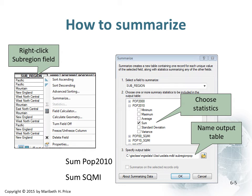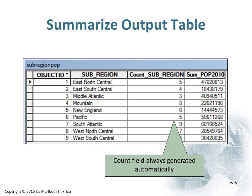To summarize things, you right-click a sub-region field and click the Summarize button. It gives you some options: you select the field you want and choose one or more statistics to be included in the output. It looks at all the different sub-regions and gives you other data — you select the fields you want, what statistics you want calculated, and where you want the table to go, and then it generates that. For example, Mid-Atlantic had three — count fields are always automatically generated — so there were three states in the Mid-Atlantic, and you can see the total population in that area.